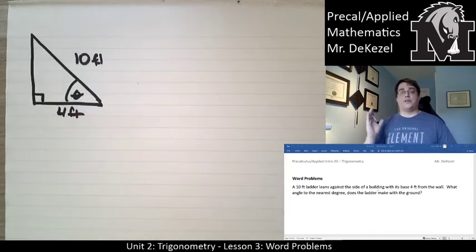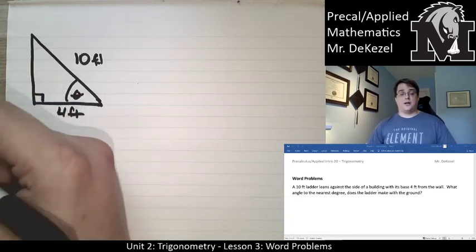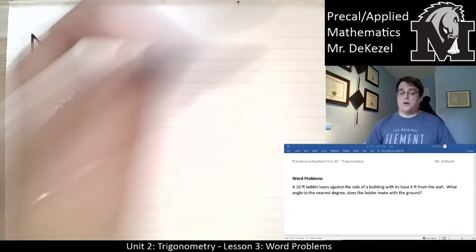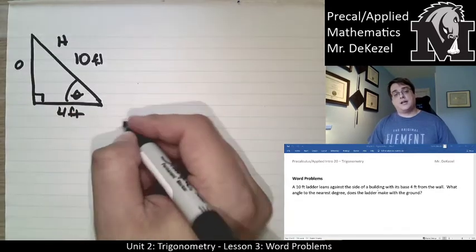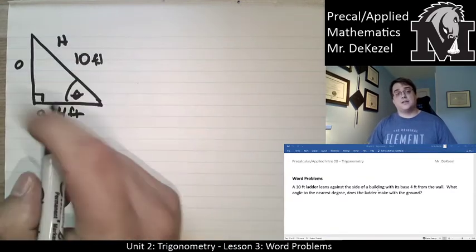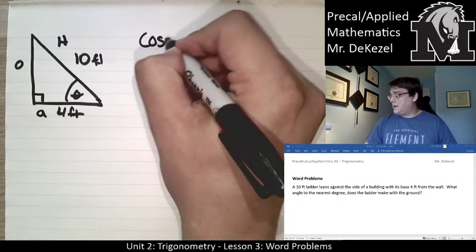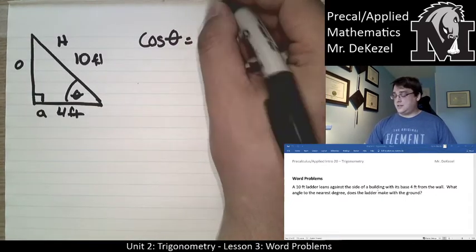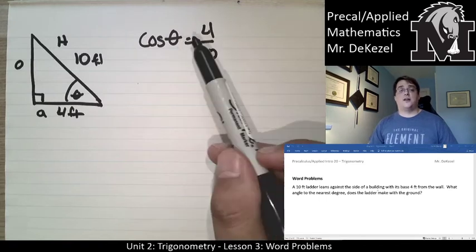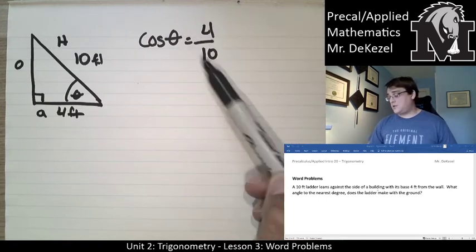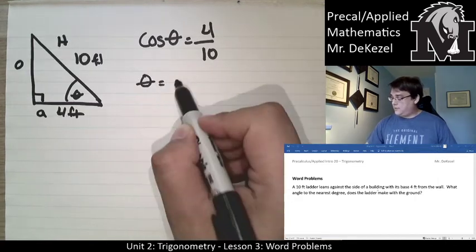The wall and ground make a right angle, so I can label the sides. The hypotenuse is always across from the right angle. Across from the angle of interest is the opposite side, and touching the angle of interest (but not the hypotenuse) is the adjacent side. I'm interested in the adjacent side and the hypotenuse, which means I use cosine. Cosine of θ equals adjacent over hypotenuse, and I'll need to apply the inverse cosine to find the angle.